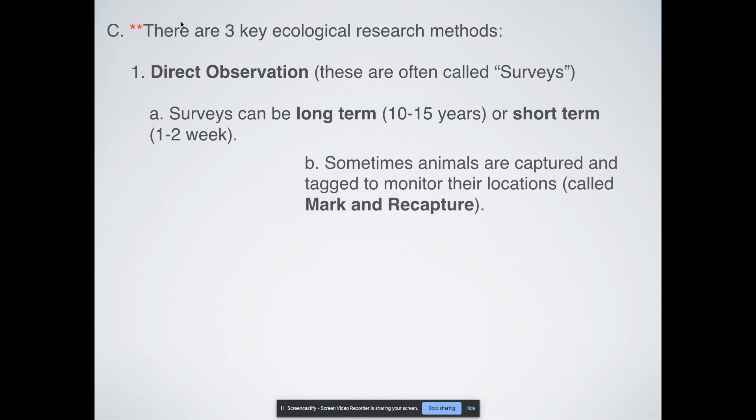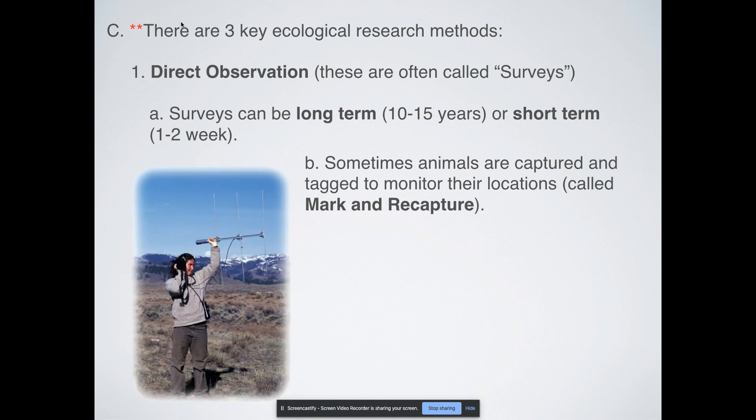Now sometimes a method that is used in association with direct observation is called mark and recapture. That is where you capture an organism and you tag it to either monitor their location or their number. You can use an audio signal if you're listening to noises that certain organisms make, like the sound of a particular hawk or eagle, listening to mating calls. All of that could be used as a way of identifying locations of where organisms are and whether certain organisms are in different locations.